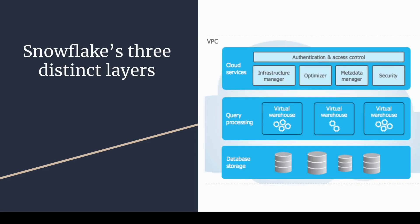Next is Snowflake's three distinct layer architecture. The top layer is the Cloud Services Layer, the middle layer is the Query Processing Layer, and the bottom layer is the Database Storage Layer. Database storage is configured on S3, query processing uses virtual warehouses running on EC2 instances, and the Cloud Services Layer handles authentication, access control, infrastructure management, optimizer, metadata manager, and security.